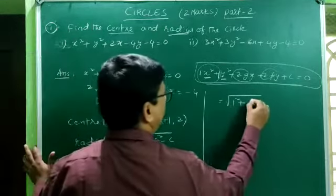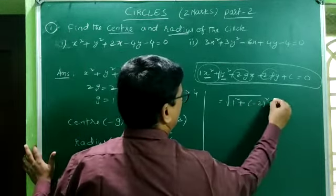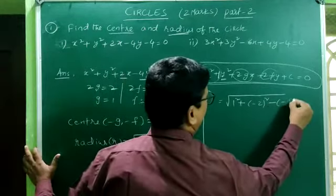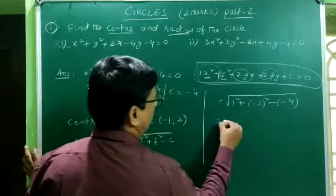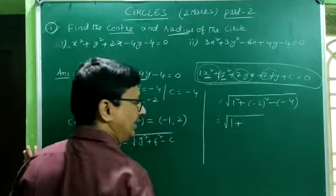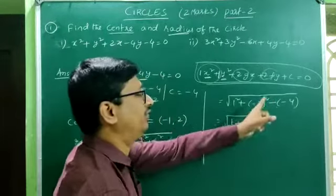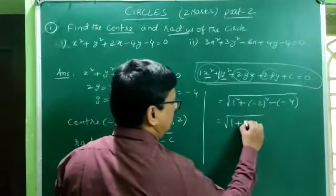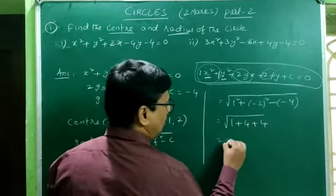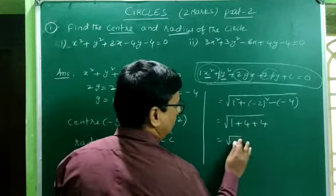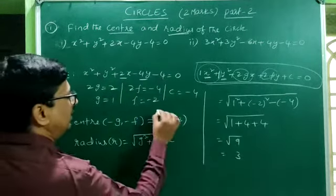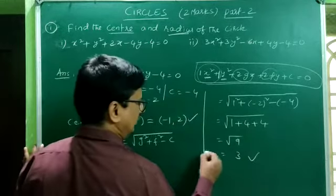Substituting the values: g = 1, f = −2, c = −4. So r = √(1² + (−2)² − (−4)) = √(1 + 4 + 4) = √9 = 3. The center of the circle is (−1, 2) and the radius is 3.